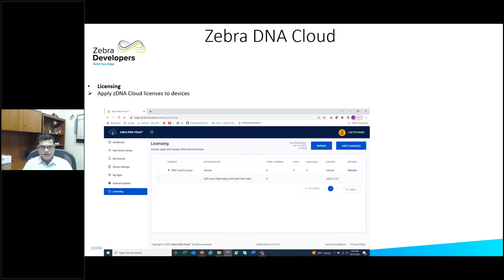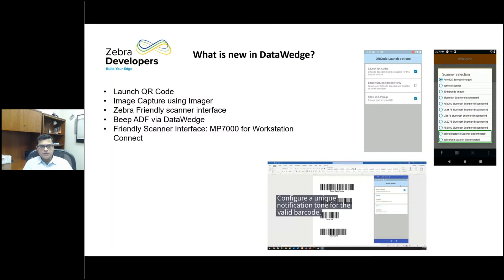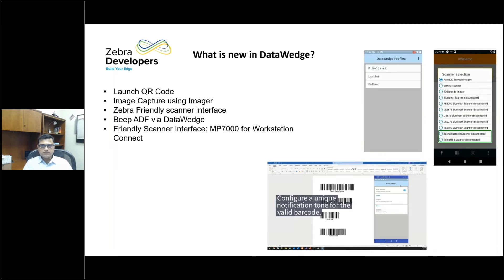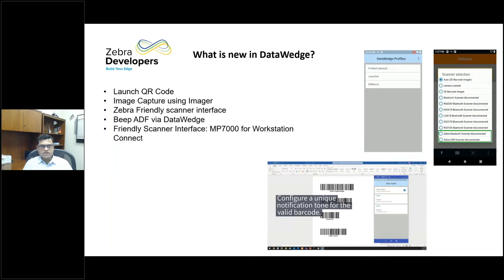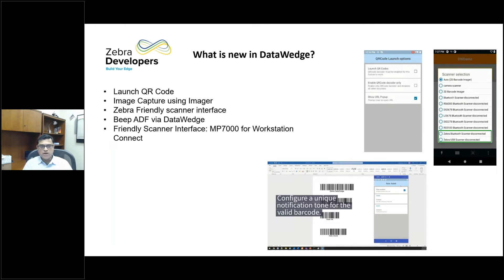That is the Zebra DNA Cloud. Moving on to the next topic: what's new in Enterprise Browser and DataWedge. Very quickly, I'll show you some of the new features we have added in the last few months. One is launching QR code, image capture using an imager-friendly scanner, and beep ADF-friendly scanner interface for MP 7000 support. All of these have been added and are available on TechDocs.